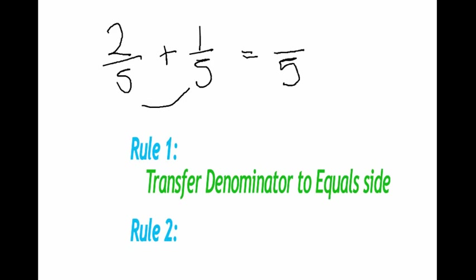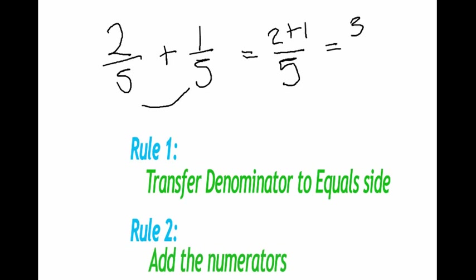The second rule is that you add the top two numbers. Now the top number of the fraction is called the numerator. So you add the numerators. So here we have two plus one over five. If we finish this calculation, two plus one equals three. That's your numerators done.